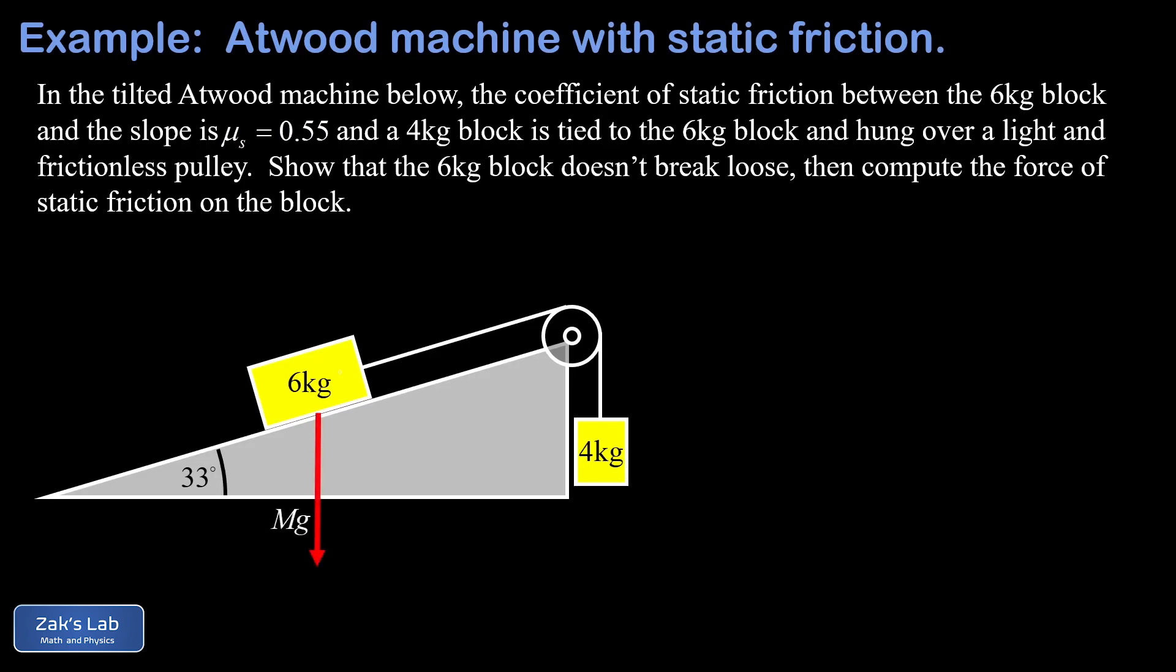So I'll start with the force of gravity on the six kilogram block, and I just called that big M times G. Now in this solution, I'm going to go ahead and run numbers as I go. So I'm going to take six kilograms times 9.8 meters per second squared. And this gives me a weight of about 58.8 newtons.